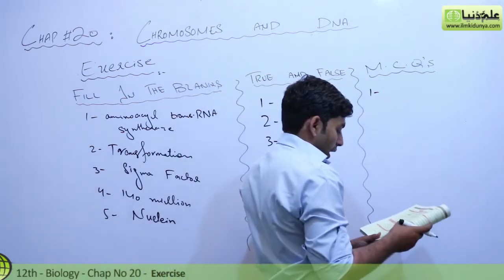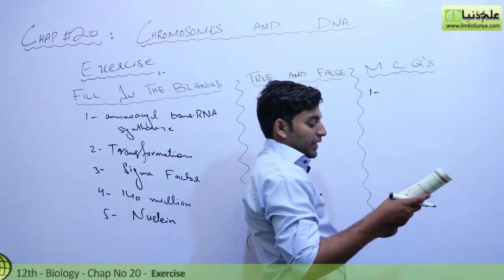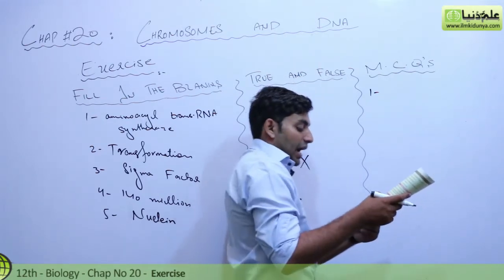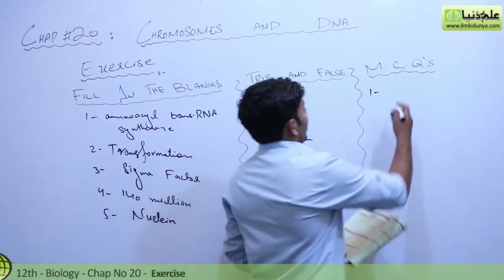MCQs. First of all, messenger RNA is synthesized by DNA polymerase, RNA polymerase, RNA ligase, or none of the above? RNA polymerase. Answer is B.